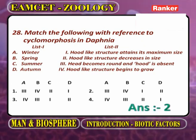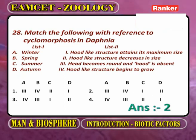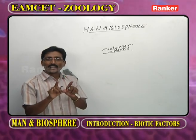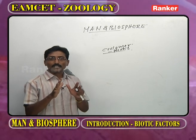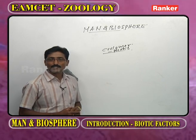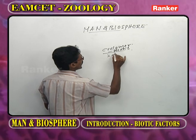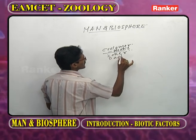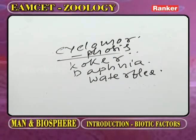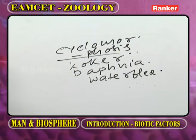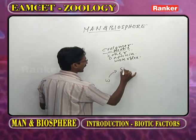Cyclomorphosis refers to seasonally repeating changes in the morphology of an organism. This was explained by Cocker with reference to Daphnia, commonly known as water flea, which is a zooplankton floating on the water surface. The seasons cycle: winter, spring, summer, then fall or autumn.